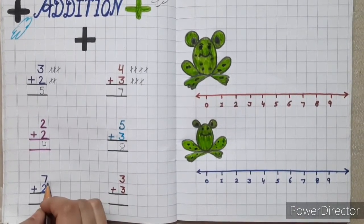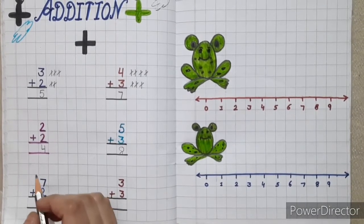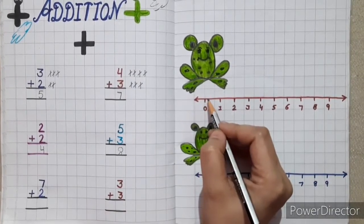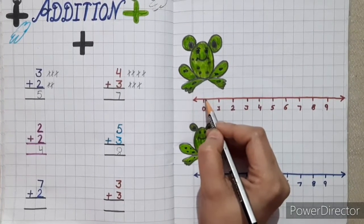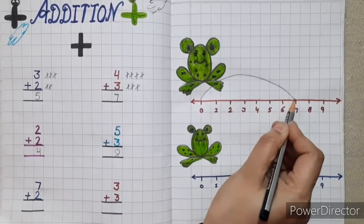See kids, here is 7 plus 2. So here, first number is 7. So firstly, frog will directly jump from 0 to 7. Like this.